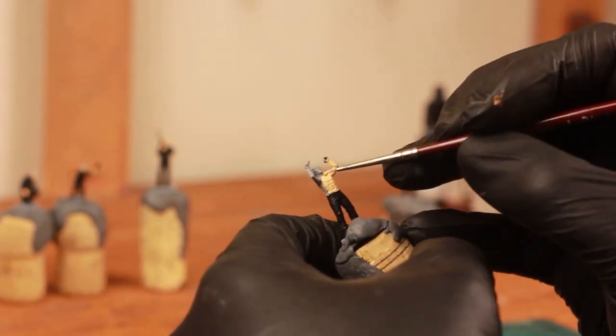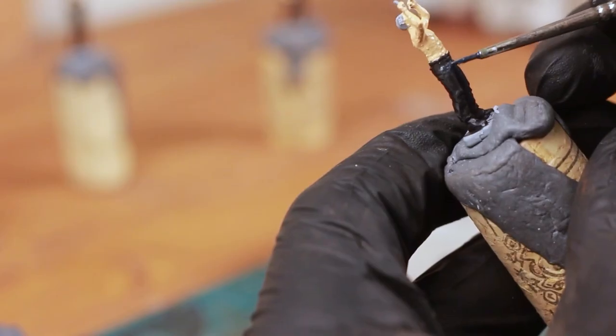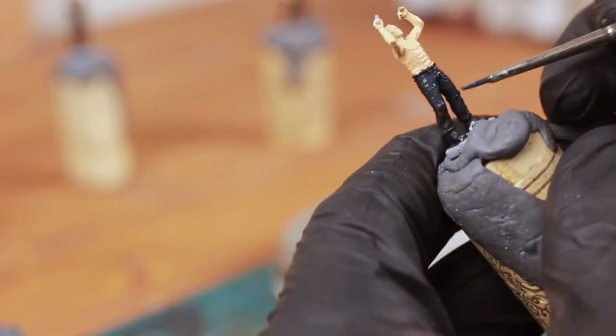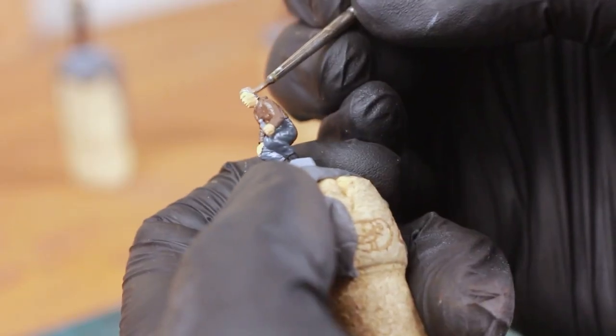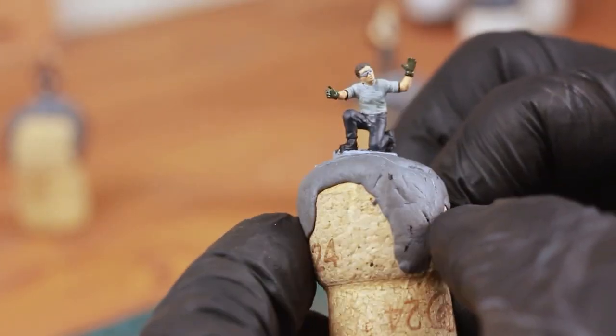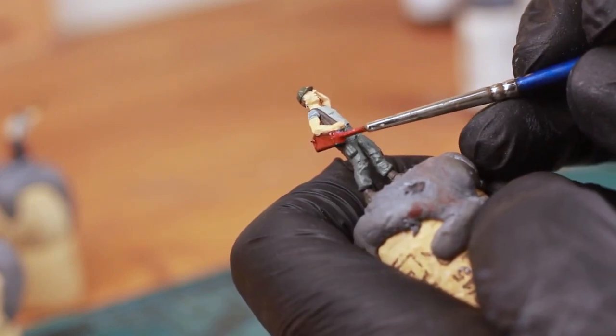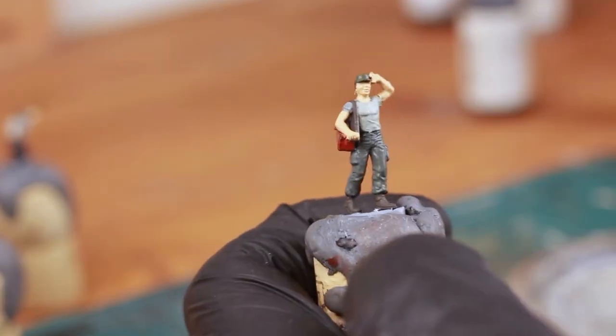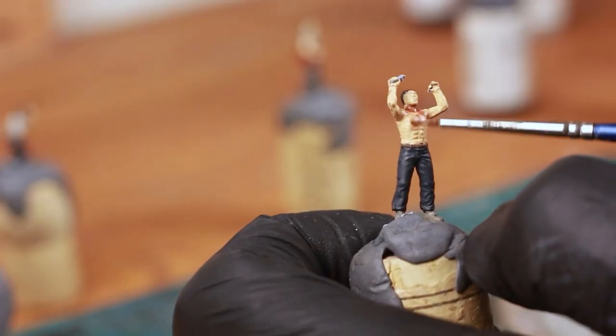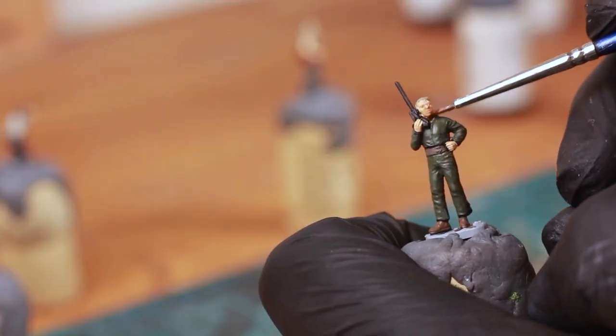Then applied flesh tones and randomly painted their clothing and equipment. Since I imagined these to be civilians, I didn't pay attention to real-life aviation personnel or original colors depicted on the box. Once I'm done with the painting, I apply flesh and black washes to bring up details.